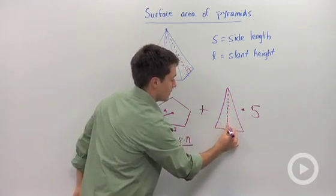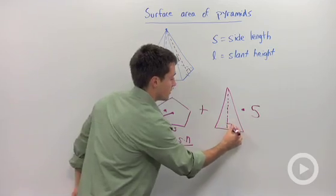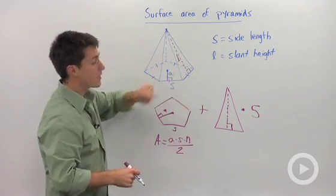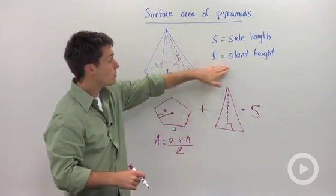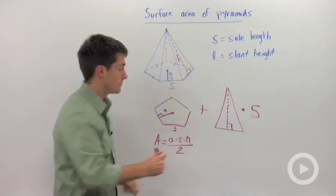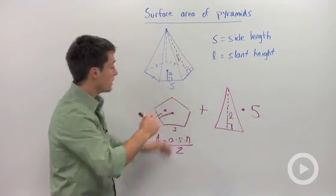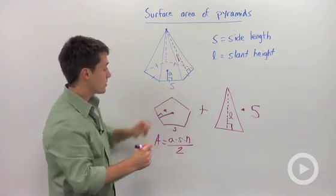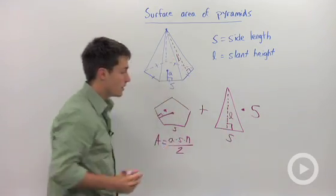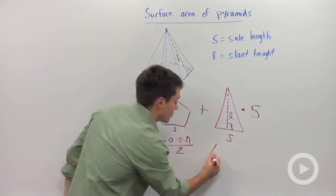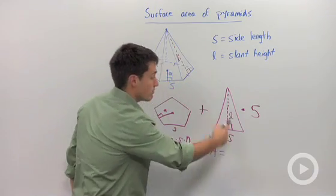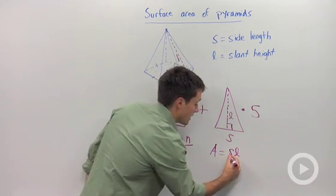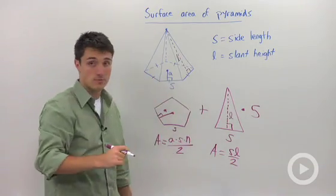Notice that the height of this triangle is not called H. In a three-dimensional figure, we're going to call that L, which stands for your slant height. So I'm going to label this as L. Notice that the base of this triangle is also S, your side length. So the area of this triangle is going to be base times height divided by two, or S times L divided by two.